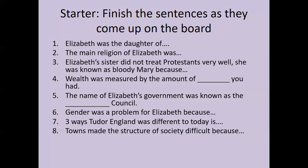Three ways Tudor England was different to today: no electricity, no tarmac roads, no sewage systems, religion was dominant in society. Towns made the structure of society difficult — towns grew quite significantly during Elizabethan times, and because of that some groups became richer, which blurred the hierarchy. Some merchants who traded things like wine became a lot richer, which could blur the lines between the gentry and these skilled merchants.